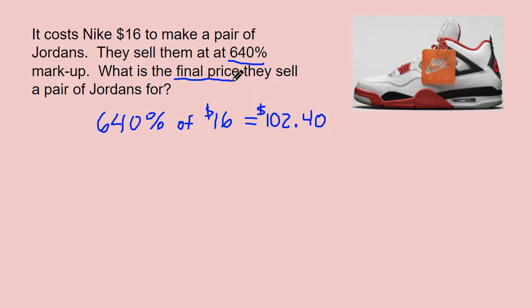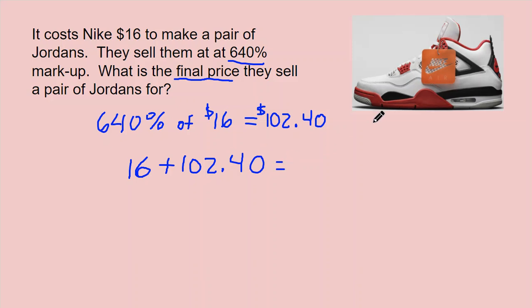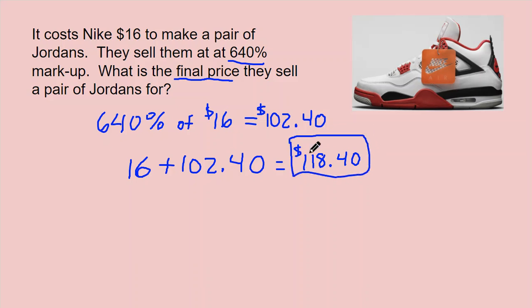The question is asking for the final price. The original price — what it costs to make the shoe — is $16, and we have to add the $102.40 markup. So 16 plus 102.40 gives me $118.40. A shoe that costs $16 to make is being sold for $118.40. That is how you do markup.